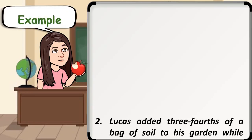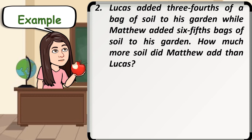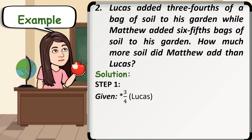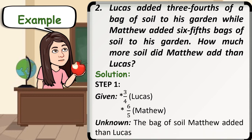Example number 2. Lucas added 3 fourths of a bag of soil to his garden, while Matthew added 6 fifths bags of soil to his garden. How much more soil did Matthew add than Lucas? Step 1: we need to find the given. Lucas added 3 fourths of a bag of soil. Matthew added 6 fifths bags of soil. We need to find how much more soil did Matthew add than Lucas.